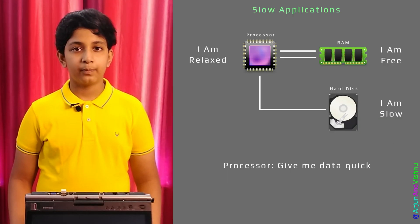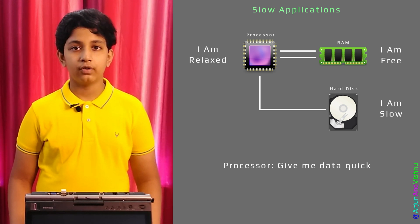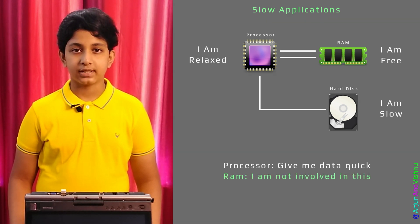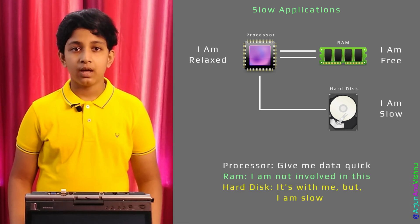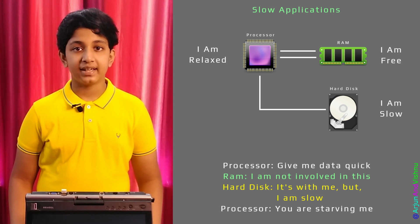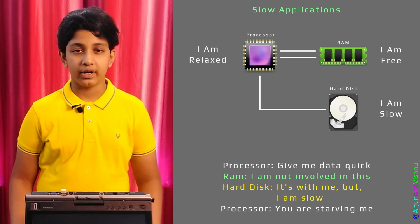The second case is that the processor is not at 100%, the RAM is also not full, but the computer is still slow. This is observed especially when new programs are started up and take a long time to load. The reason for this could be a slow hard disk causing data starvation for the processor. You can observe this as IO wait in Linux System Monitor, but Windows does not show IO wait because of the different way it handles processes.